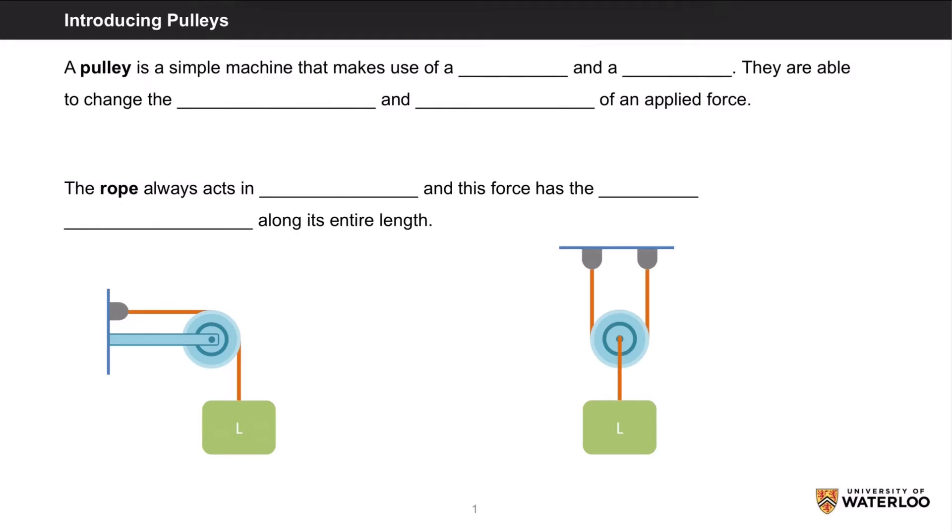A pulley is a simple machine that makes use of a wheel and a rope. The rope can also be a cable or a chain. The most common use for pulleys is for lightening loads as they are able to change the magnitude and direction of an applied force.